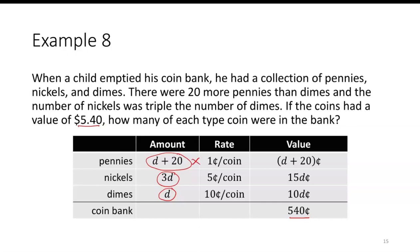For each row, you multiply, that gives you the value. So 1 times d plus 20 is d plus 20 cents. 5 times 3d is 15d. 10 times d is 10d. And again, this last column here gives us our equation, where we have the d plus 20 plus 15d plus 10d is equal to 540.